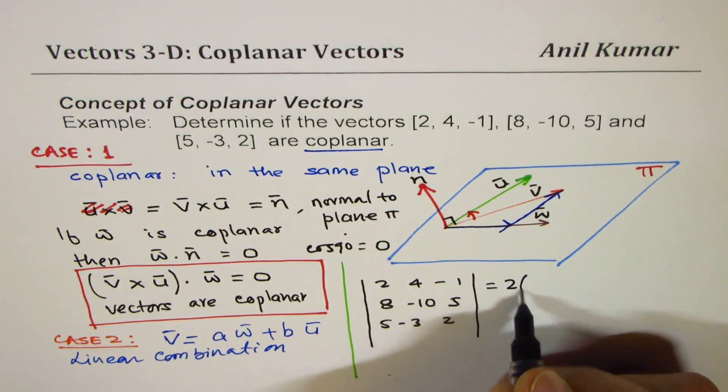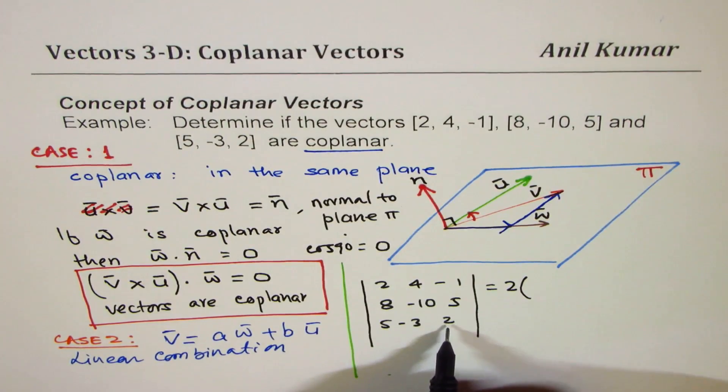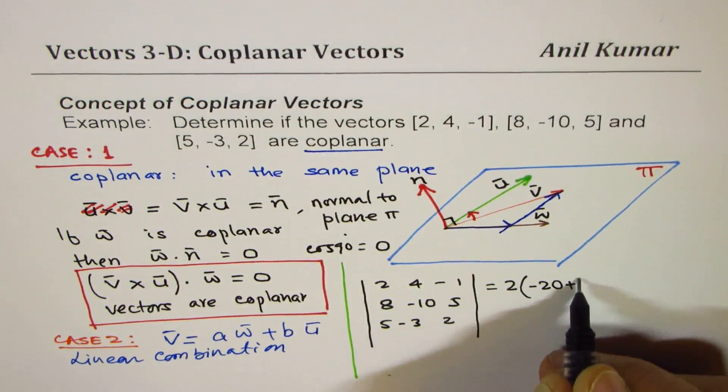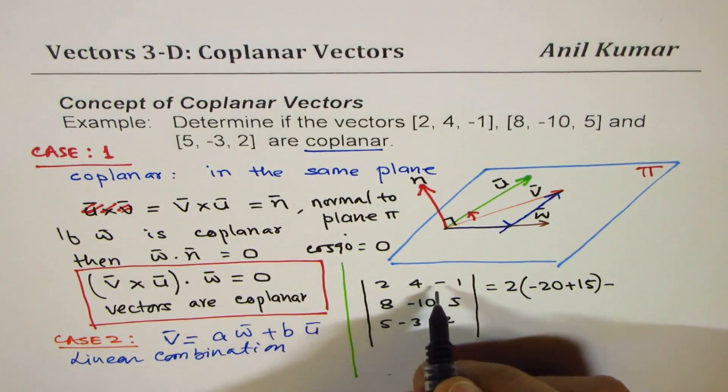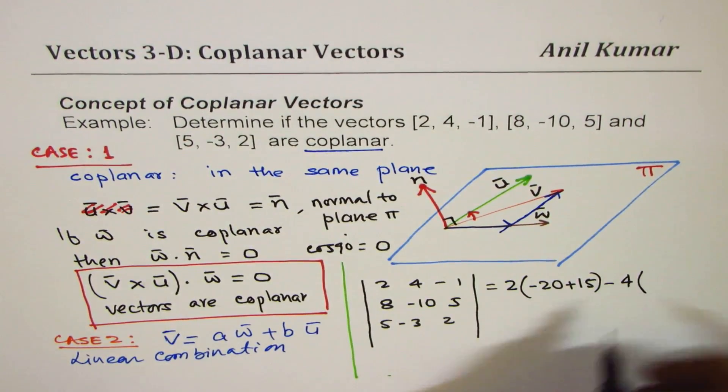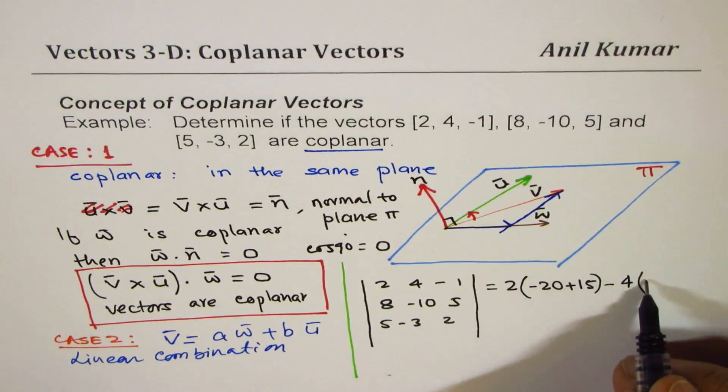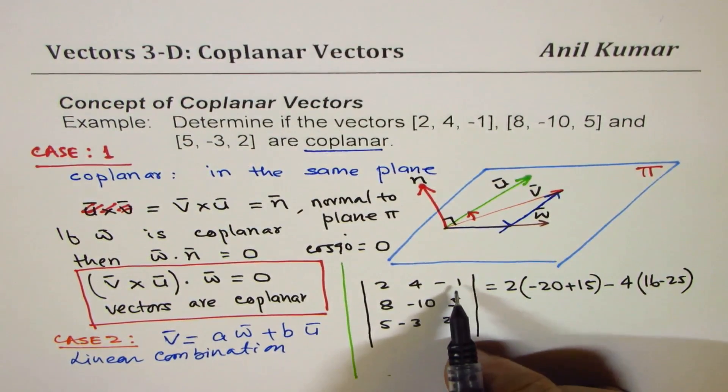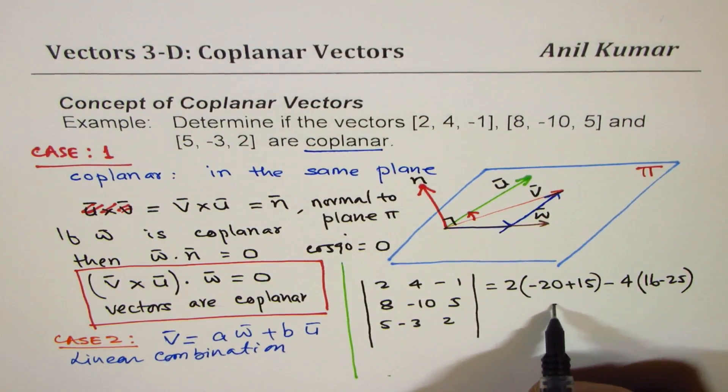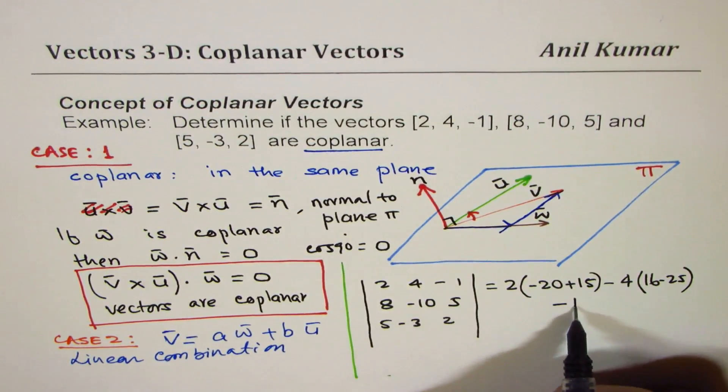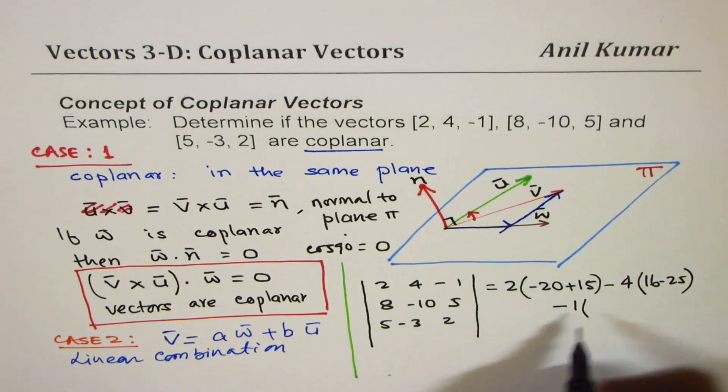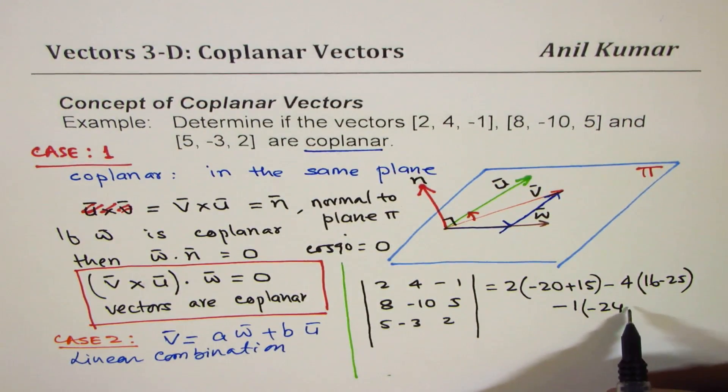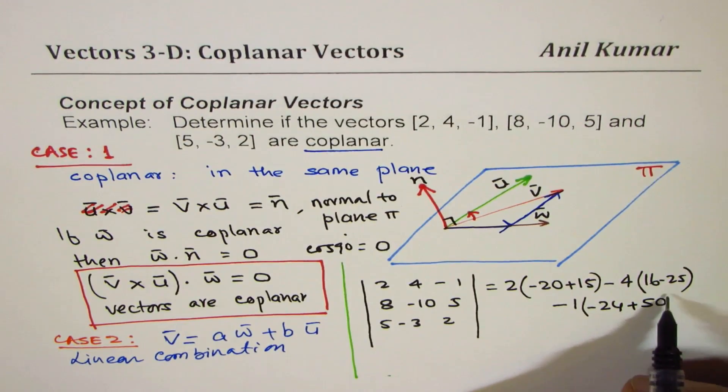Let's do the triple product. We can do all of these three things together. So we'll write this as [2, 4, -1] times dot product with this of cross product with [8, -10, 5] and [5, -3, 2]. I'll use this space to calculate. So it is 2 times -10 times 2, which is -20, minus this, that is plus 15.